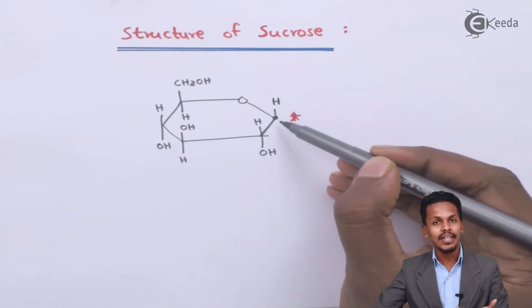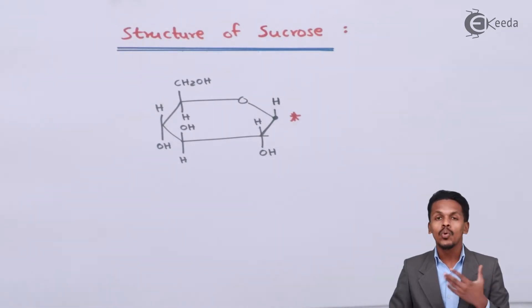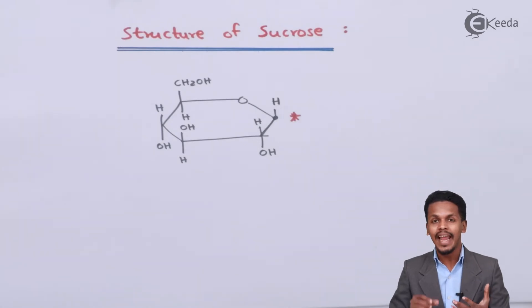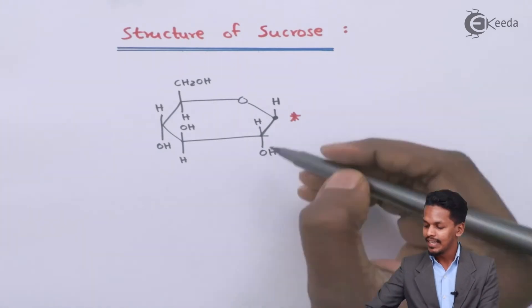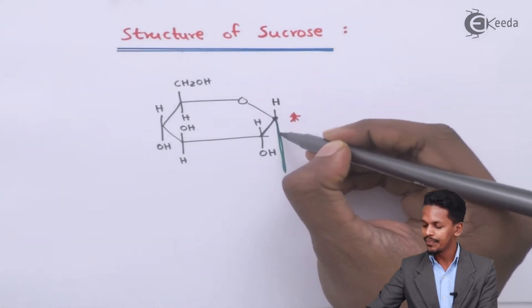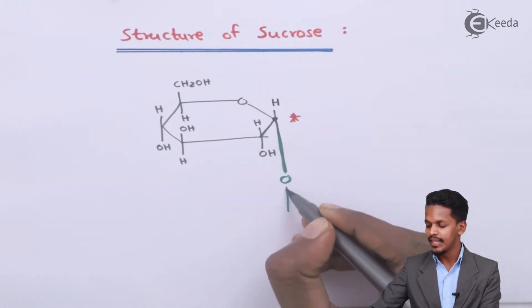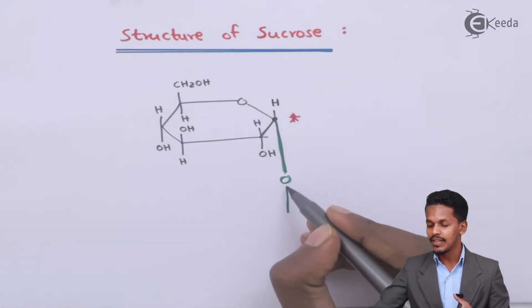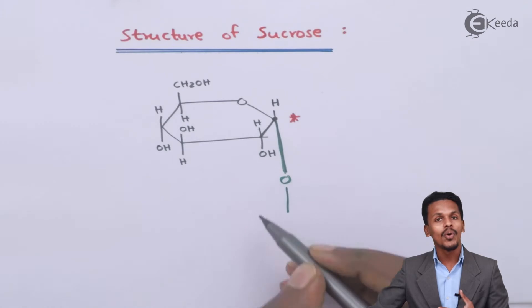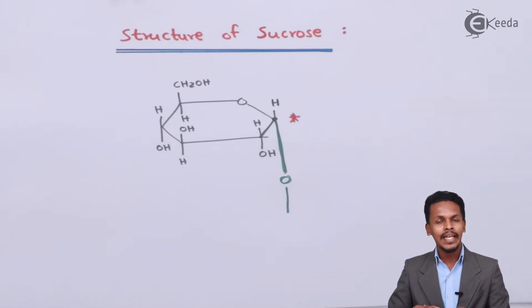Sucrose is a combination of alpha-glucopyranose and beta-fructofuranose, and between them we can find a glycosidic linkage. The glycosidic linkage forms between the alpha-D-glucopyranose and the beta-fructofuranose. For beta-fructofuranose, there is a presence of OH on the upper side on the anomeric carbon atom.